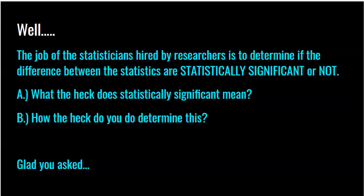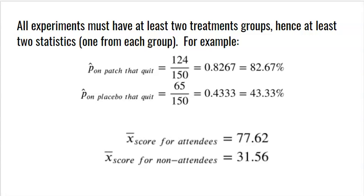Now that we have the statistics at the end of the experiment, it's the job of statisticians to determine if the difference between the statistics is officially statistically significant or not. If you love this class, go to college and major in statistics — you can get paid a lot of money to answer this question. It actually involves two things: understanding what statistically significant means, and knowing how to determine it. If I look at 82% versus 43%, first I need to know what statistically significant means, and then I need to prove it — and that's where the math comes in.